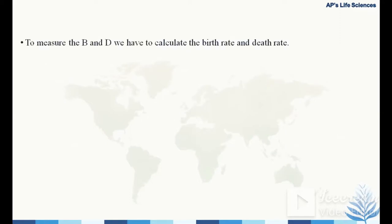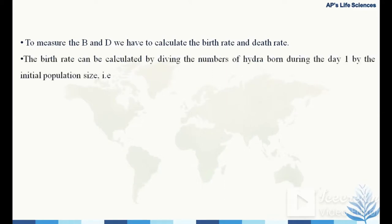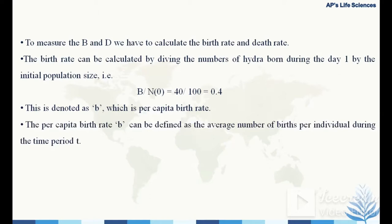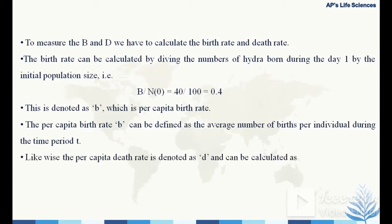To find b and d we calculate the per capita birth rate and death rate. The per capita birth rate (small b) equals births divided by initial population: 40 / 100 = 0.4. The per capita death rate (small d) equals deaths divided by initial population: 10 / 100 = 0.1.